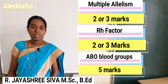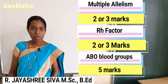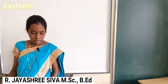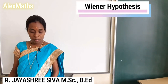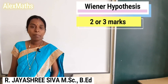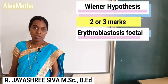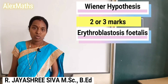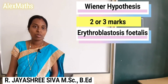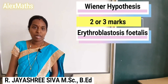For a 5-mark question, you can write about the ABO blood group. There is also the Vainer Hypothesis, worth 2 or 3 marks. The blood condition called Erythroblastosis Fetalis involves a pregnant woman whose baby has the opposite Rh factor.